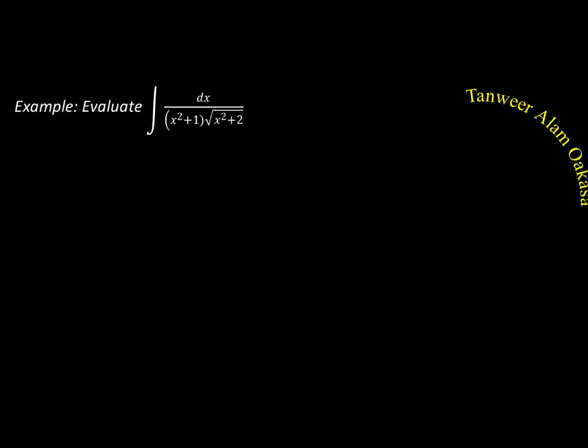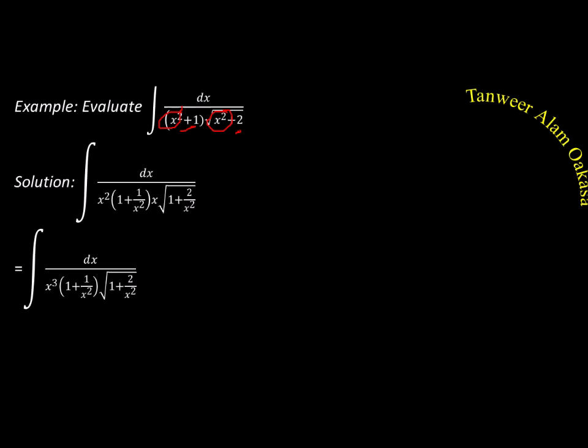Let's take an example of this special form with both quadratics in the denominator and no x term. We use Sipten's method and take x² out from both factors. This gives x³·(1 + 1/x²)·√(1 + 2/x²) in the denominator. Now we apply the substitution.